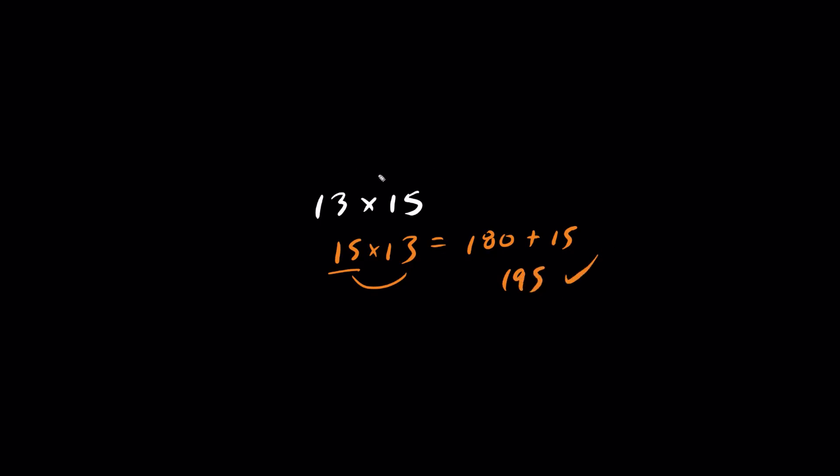One more way of doing this is to take the middle number squared. So the middle number is 14 and we square it minus 1. What is 14 times 14? It's 196 minus 1, which is 195. Same answer.